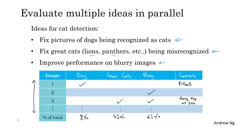As you're part way through this process, sometimes you notice other categories of mistakes. So for example, you might find that Instagram style filters, those fancy image filters, are also messing up your classifier. In that case, it's actually okay, part way through the process, to add another column like that for the Instagram filters and the Snapchat filters, and then go through and count up those as well, and figure out what percentage comes from that new error category.